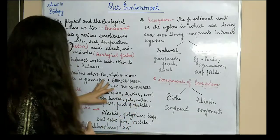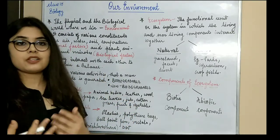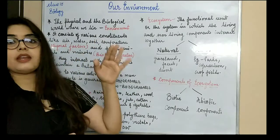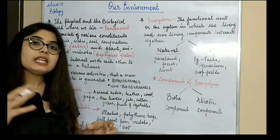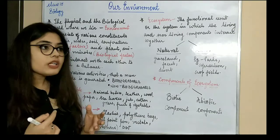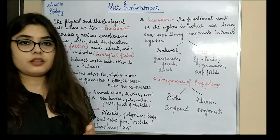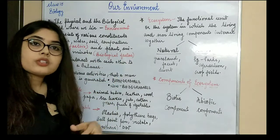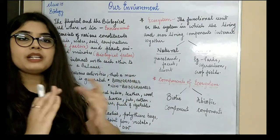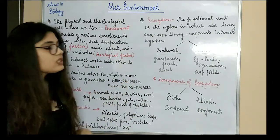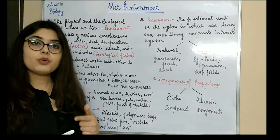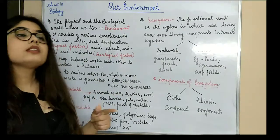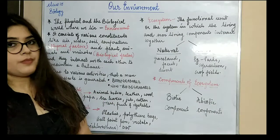Biodegradable waste is a waste which can be decomposed by microorganisms. Microorganisms basically decompose these substances — in simple terms, they convert them into less toxic substances, making them less harmful for the environment. So those substances which can be decomposed by microorganisms into less toxic or less poisonous substances are known as biodegradable substances.